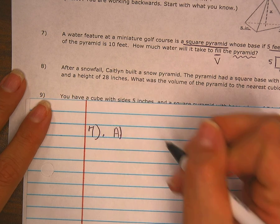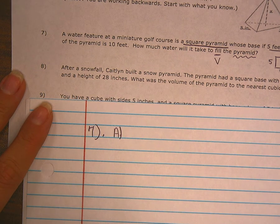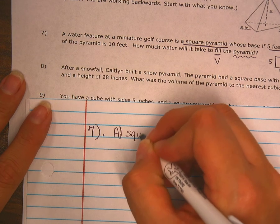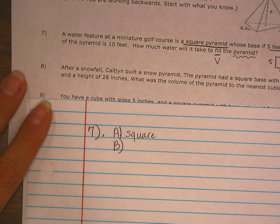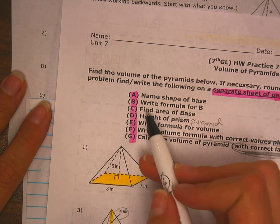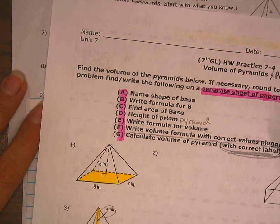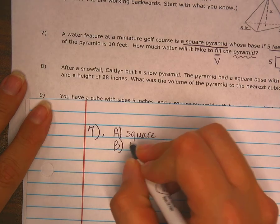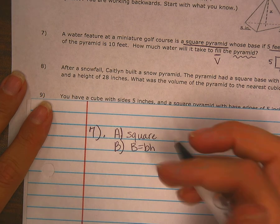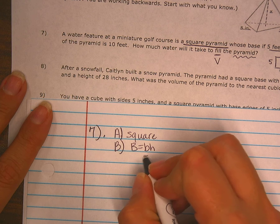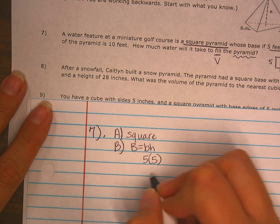We'll have number 7. Letter A says I'm going to name the shape of the base. It's a square. Part B says I'm going to write the formula. This is what I'm looking at. Write the formula for big B. That would be big B equals base times height. Then it says to find the area of my base. I'm plugging in numbers. This is 5 times 5, which is 25.